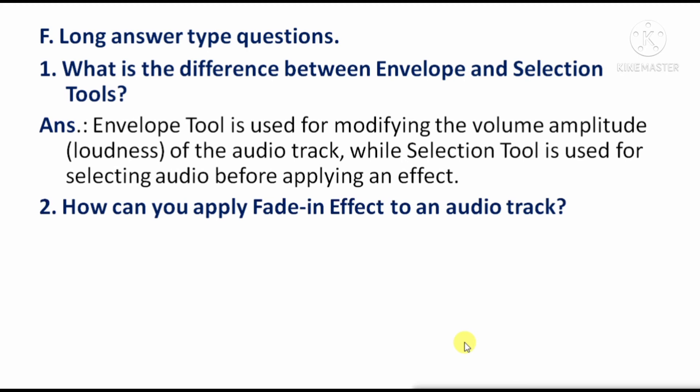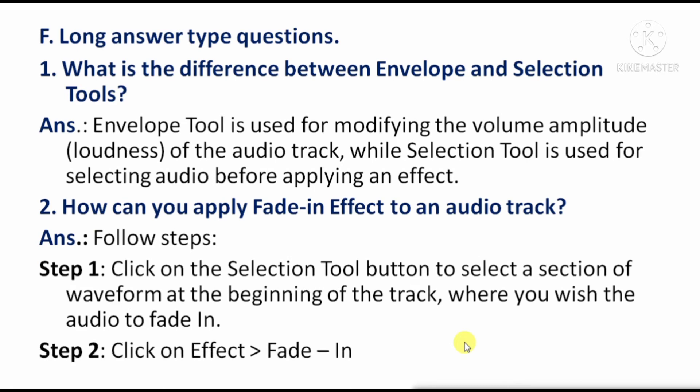Next question — How can you apply a fading effect to an audio track? Step 1: Click on the Selection tool button to select a section of the waveform at the beginning of the track where you wish the audio to fade in. Step 2: Click on the Effect menu and choose the Fade In option; this will apply the fade-in effect to the track.